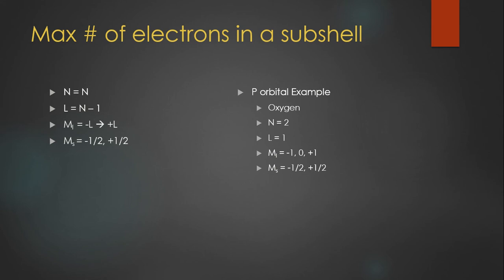So for example, as we just looked at, for oxygen, we know that it has an n equals two value, so that means L is going to be two minus one, so one. And so since L equals one, then ML is going to be negative one, zero and positive one. And then we have the ms values.